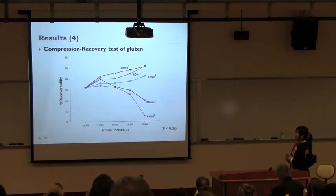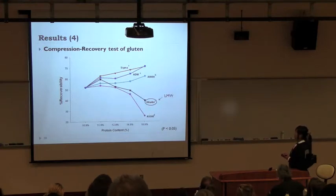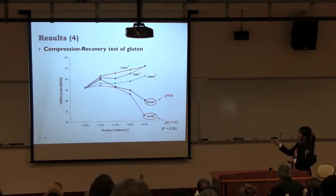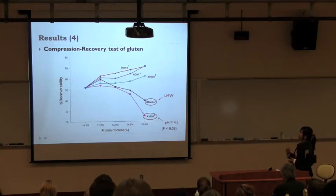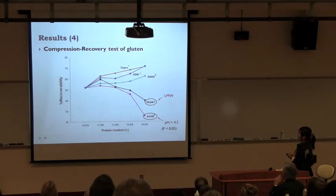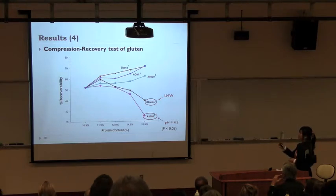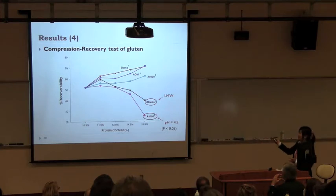The take-home message from this graph: first, these two products again make the percent recoverability of gluten decrease. The second take-home message is that the compression recovery test can discriminate percent recoverability when we add more protein content with the gluten product.